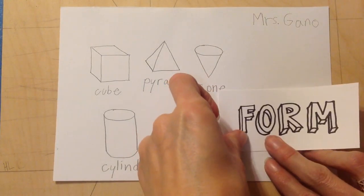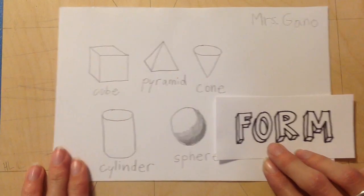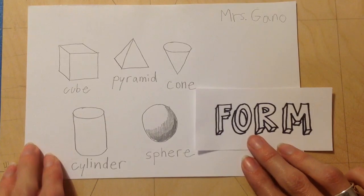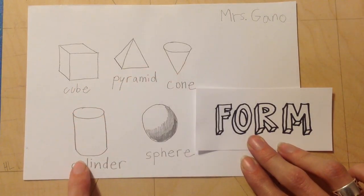So here are our five basic forms. We have cube, pyramid, cone, cylinder, and sphere.